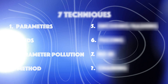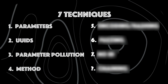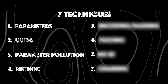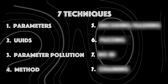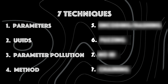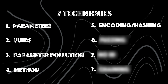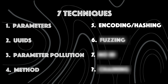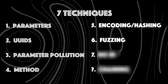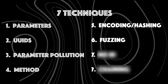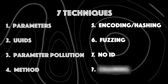We have now looked at three additional techniques to identify IDOR vulnerabilities: how to handle encoded or hashed IDs, how to fuzz endpoints for IDORs, and what to do when no ID is present in the URL.